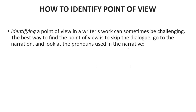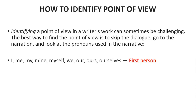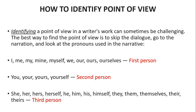Identifying a point of view in a writer's work can sometimes be challenging. The best way to find the point of view is to skip the dialogue, go to the narration, and look at the pronouns used. That is the most important clue. First person pronouns include: I, me, my, mine, myself, we, our, ourselves. Second person: you, your, yours, yourself. Third person: she, her, hers, herself, he, him, his, himself, they, them, themselves, theirs. Without knowing these persons and pronouns, we cannot identify the point of view.